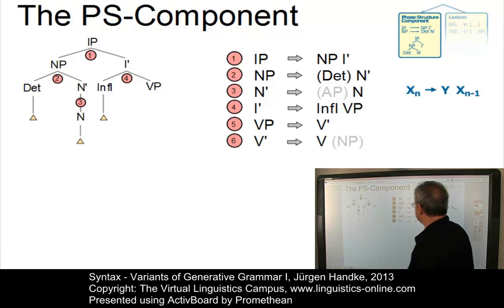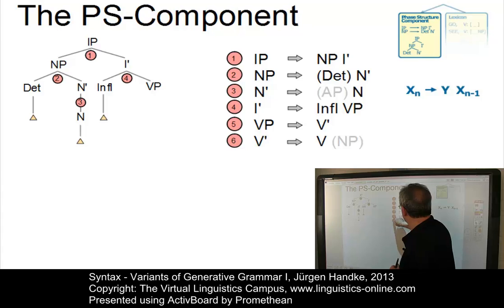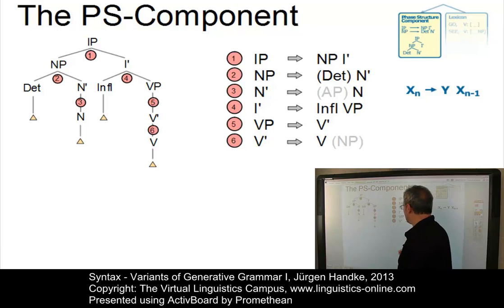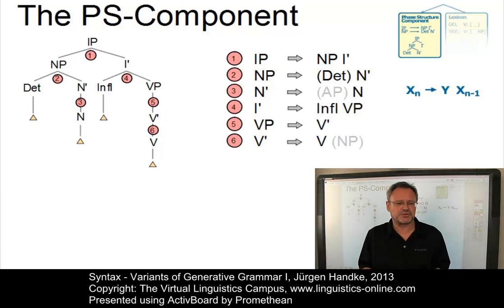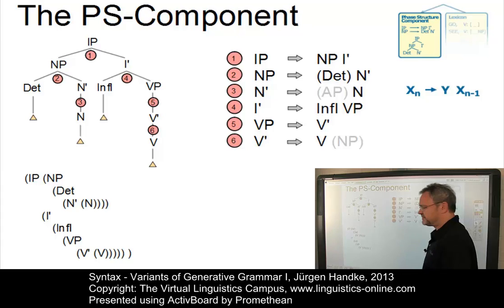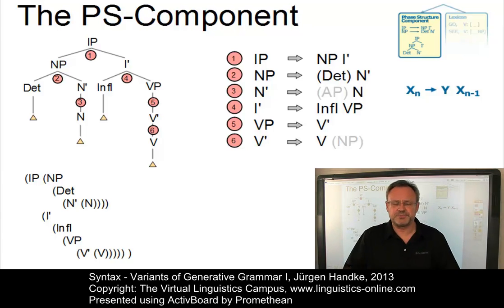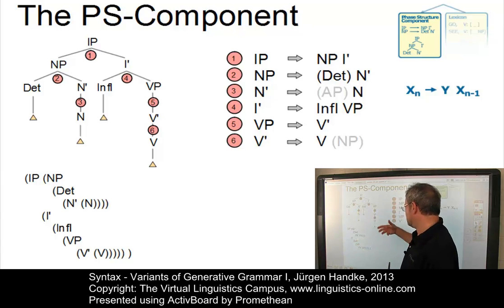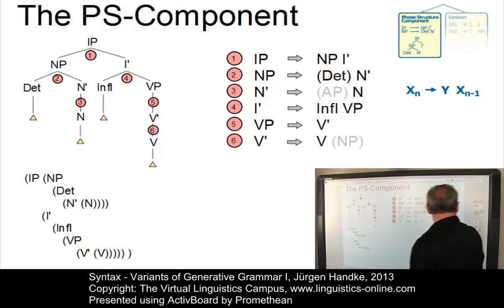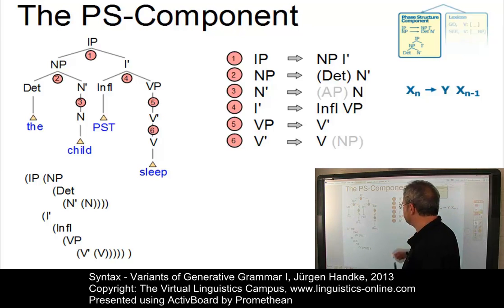Rule number four expands I-bar into the inflectional component and the verb phrase. The verb phrase is expanded into verb bar, and verb bar is finally expanded into verb. The optional noun phrase, which could be part of a verb phrase, is not used here. Alternatively, you can also present such a tree by means of a list, and there are several people who prefer such a list, especially programmers who find this representation more explanatory than a tree. A reasonable sentence using this structure could be something like 'the child passed sleep,' that is, the child slept.